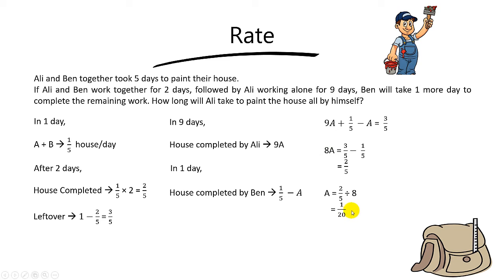Wow, fantastic! We have finally calculated the rate for A. So what does this 1 over 20 mean? It means that in 1 day, Ali by himself can complete 1 out of 20 of the house. So based on this information, can you tell me how many days does Ali take to paint the house by himself? The answer will be 20 days.